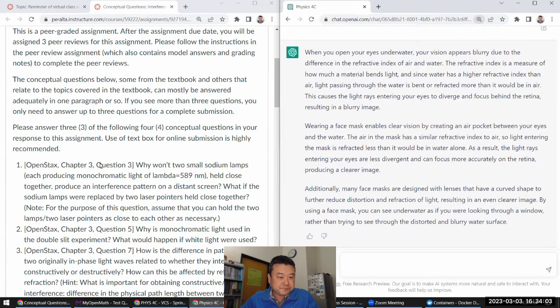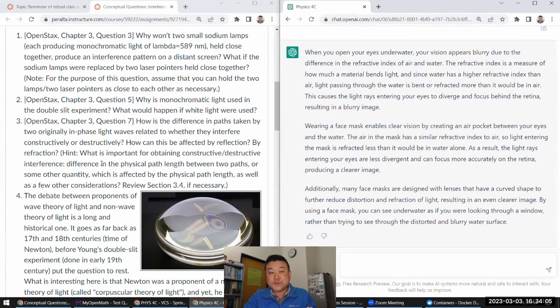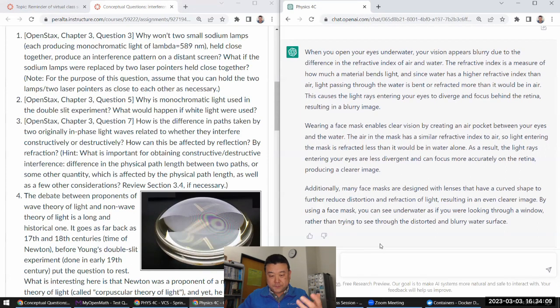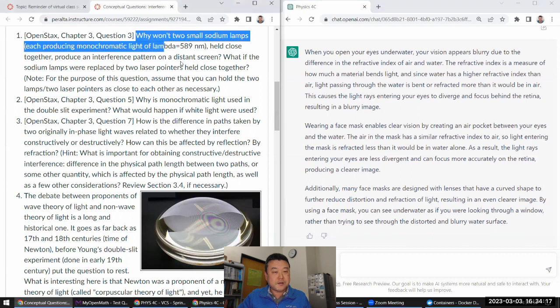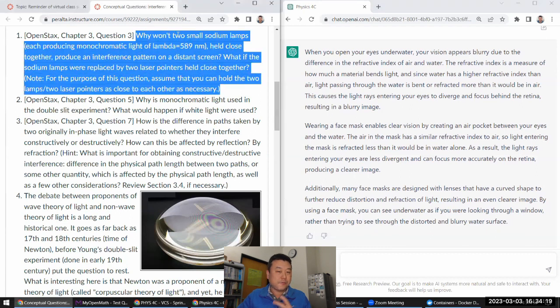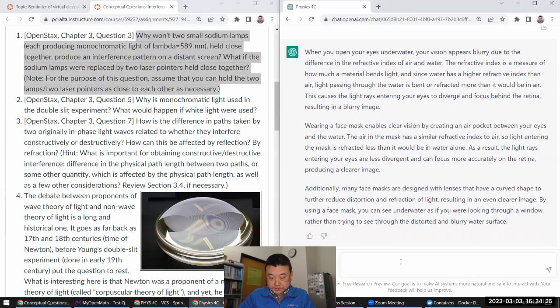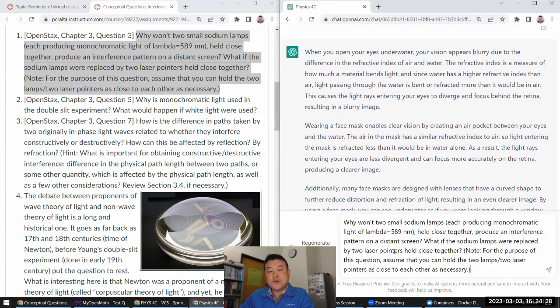Now that I'm here, let me just ask each question one at a time. We'll see how this is from previous week. We'll see how ChatGPT responds and then I will critique its answers. So very first question, this is from your textbook. Why won't two small sodium lamps produce an interference pattern? Let's ask the question of ChatGPT and let's see what it says.